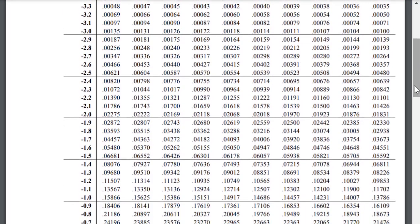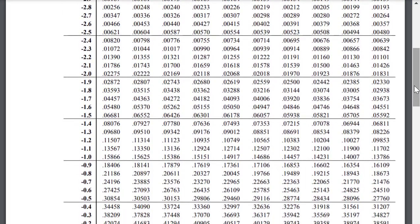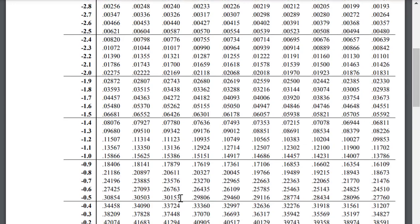We want to find the score that cuts off 30%. So look in the center of the table for the closest value you can find to 30%. The z-table is written in decimal, and 30% is 0.3. This value here is the closest I can find to 0.3.